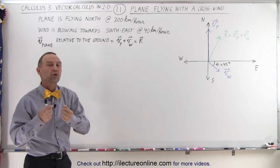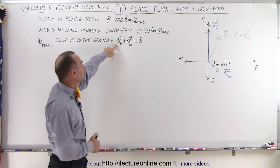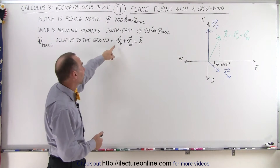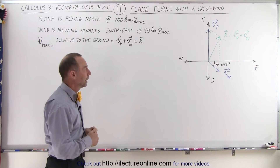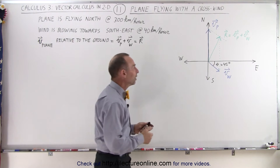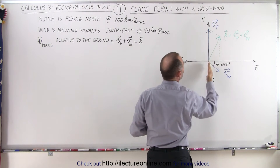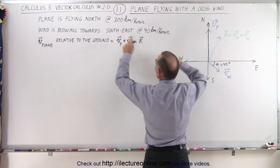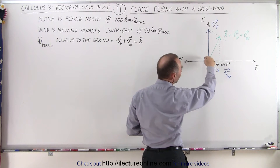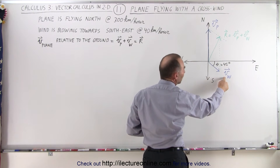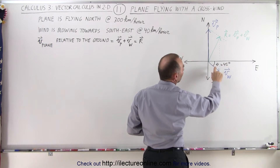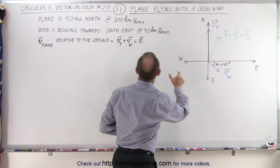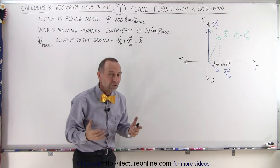The answer is the vector sum of the two vectors — the vector representing the velocity of the plane and the vector representing the velocity of the wind. The velocity of the plane is relative to the air. The blue arrow represents the plane flying north, with its magnitude corresponding to 300 kilometers per hour. The wind vector points southeast at 45 degrees relative to east, with a length corresponding to 40 kilometers per hour.